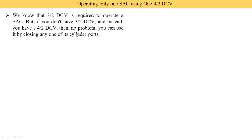No problem — you can use it by closing any one of its cylinder ports. In a 4/2 directional control valve, we have 2 ports: port A and port B as outlets. Out of these 2, we need to block any one of the cylinder ports, and then we are able to use the 4/2 DCV for a single acting cylinder.